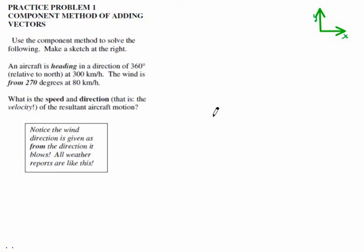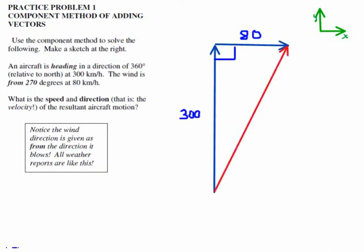Here's the example: an aircraft heading straight north and a wind blowing from 270 degrees, so it's going to the east. Don't forget - sometimes winds are described by where they're from, not where they're going. There's the diagram, not drawn to scale. Let's call it A-vector for airplane and W-vector for wind. Now let's break the A vector into its lefty-righty bits. The airplane's going straight up - it doesn't have any X component.